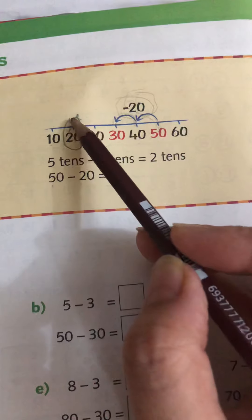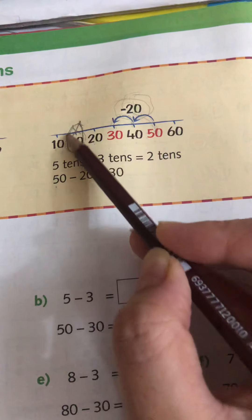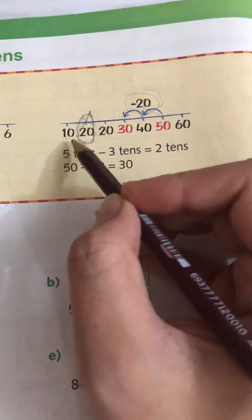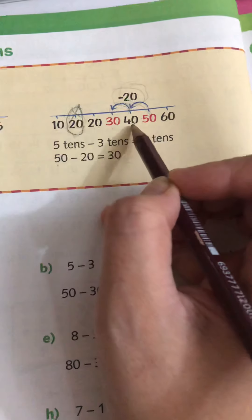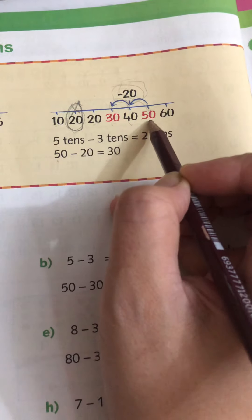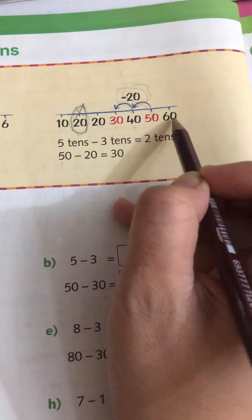The same way we can do in tens. So 10, 20, 20. This is misprinted. This shouldn't be 20 again because after 10 it comes 20, then 10 more 30, then 10 more 40, 10 more 50, then 10 more 60.